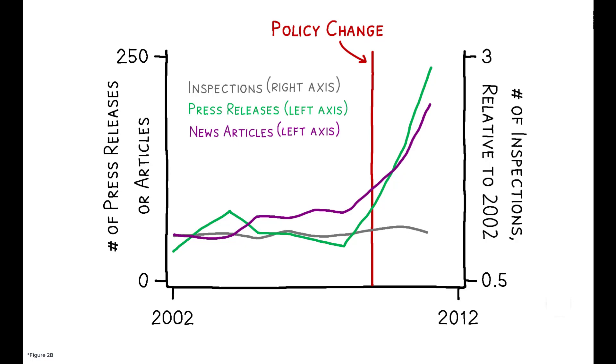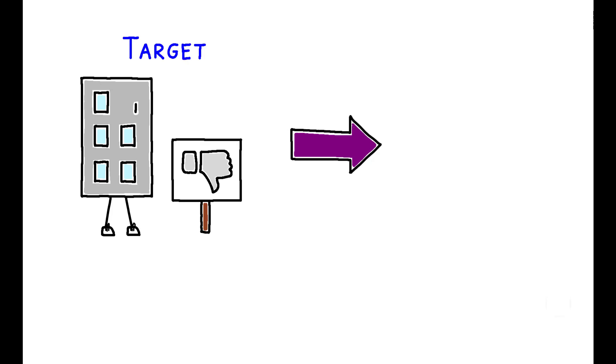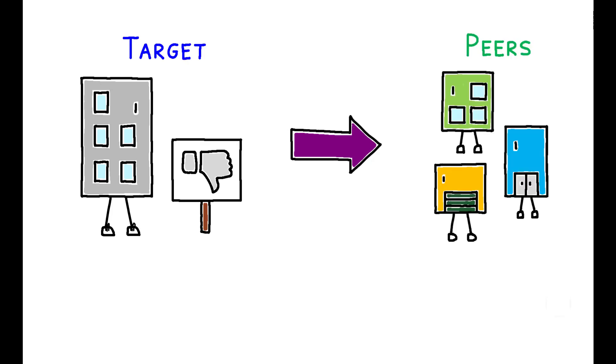So did this increase in negative publicity induce more firms to change their behavior? To isolate the causal impact of negative publicity at one facility on the behavior of its peers, the author compares cases where the penalties levied on the target fall just on either side of the press release cutoff.